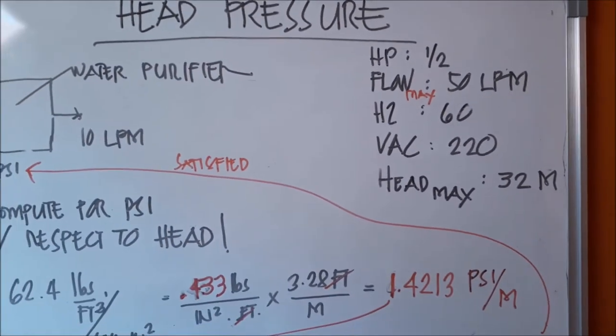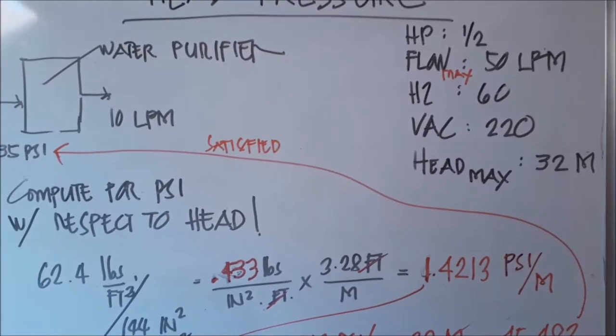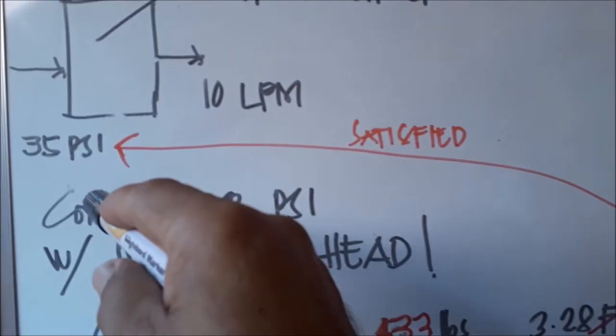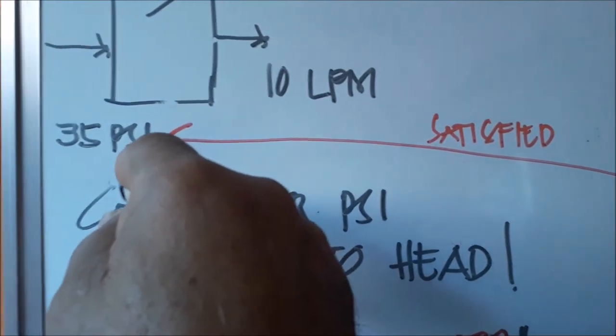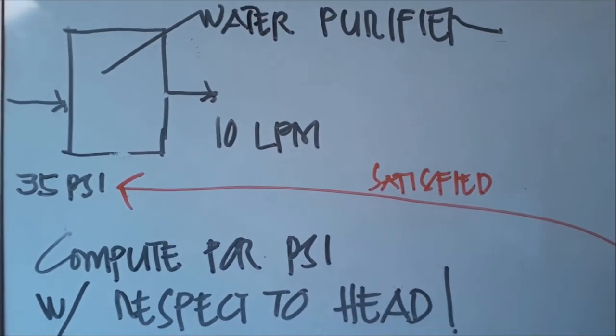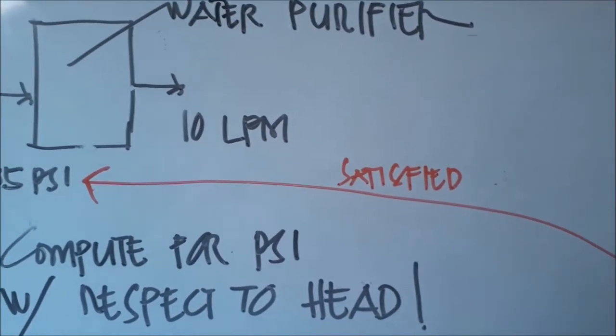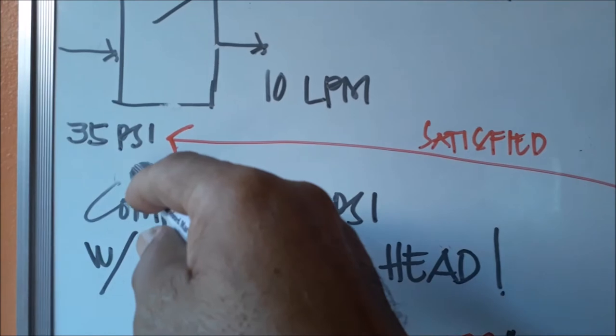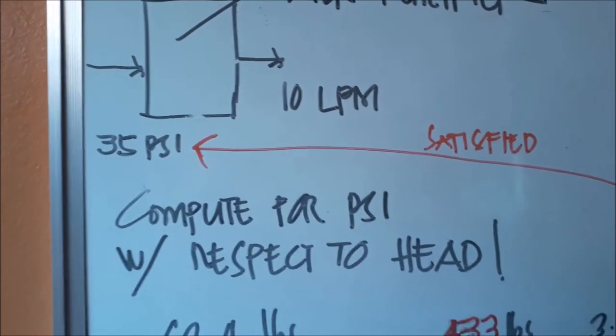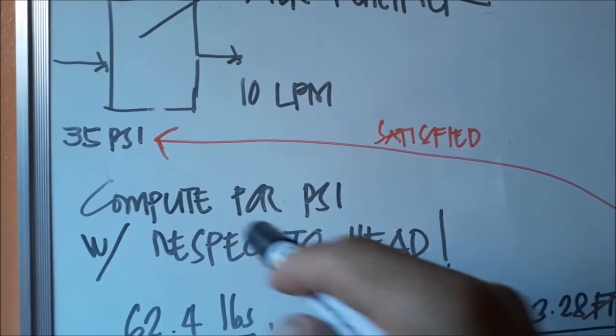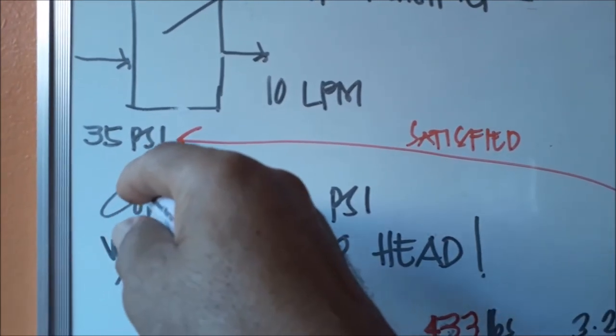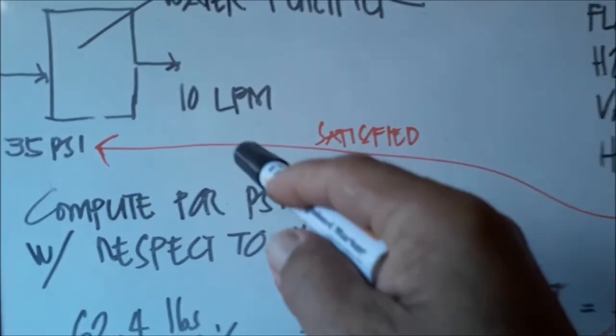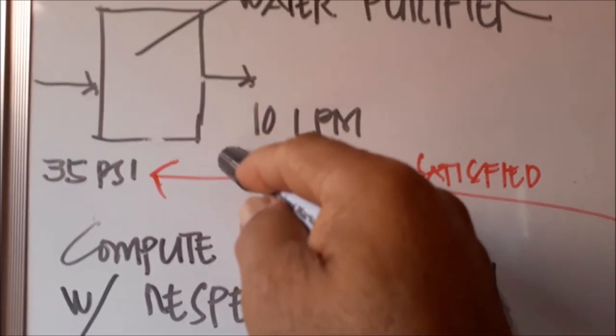We have a water purifier with a required pressure at inlet of 35 PSI. Let's find in the pump spec what can provide 35 PSI. It's okay if it's higher than 35, that's fine because the pressure can be adjusted. If you don't want it higher than 35, we can work with 40 PSI, just not below 35 because we won't meet the design flow of the water purifier.